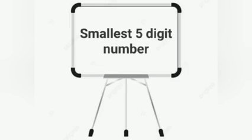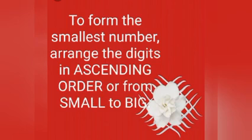Next, we want to know how to form the smallest five-digit number. Are you ready? Okay. The rule is: to form the smallest number, arrange the digits in ascending order, or from small to big.